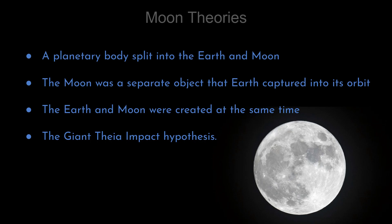Here are some other theories as to how the moon was formed. One says that a single planetary body split into the earth and moon. Another says that the moon was a separate free object that earth captured into its orbit. Another says that the earth and moon were created at the same time as partners. The final theory is the Giant Impact Theia Hypothesis.